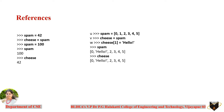Now moving to the next concept: references. We'll see what happens when we change the content of a normal variable versus a list variable. In the first example, the variable 'spam' is assigned the value 42 — spam is an integer variable containing 42. Then we take a new variable 'cheese' and copy spam to cheese.